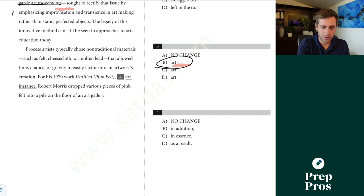All right, next up here, once again, I'll just kind of skim through this part quickly. But next up, we have a transition question. So even though it's in this sentence, I still want to read the prior sentence carefully for context. So process artists typically choose non-traditional materials such as felt, cheesecloth, or molten lead that allowed time, chance, or gravity to easily factor into an artwork's creation. For his 1970 untitled pink felt, blank, Robert Morris dropped various pieces of pink felt into a pile on the floor of an art gallery. So we're talking about how they chose non-traditional materials that allowed them to do this. Now we're simply giving an example of somebody doing that. So for instance, is the only one which is one of our example transitions given here. So that's why it has to be A.